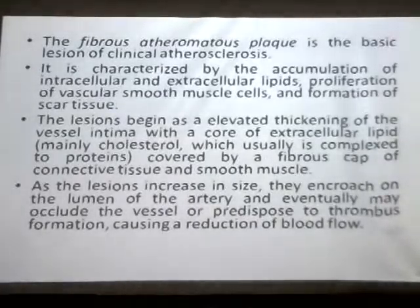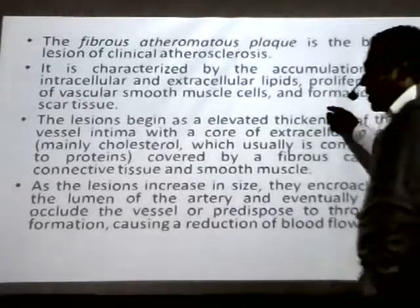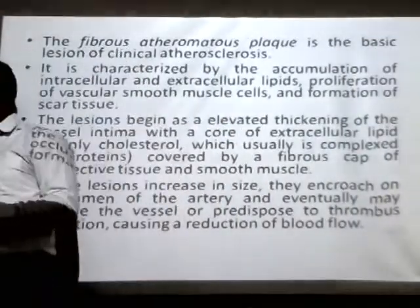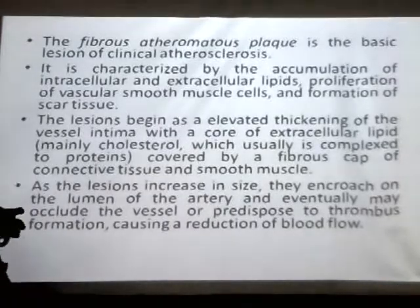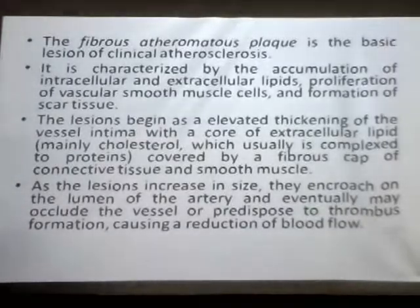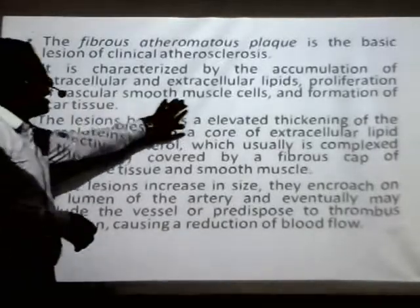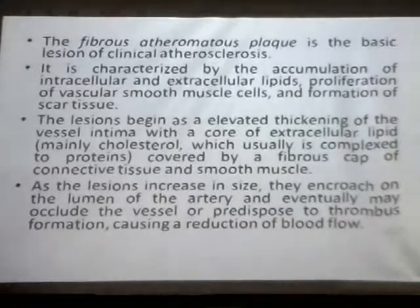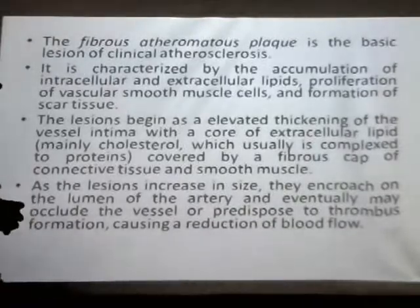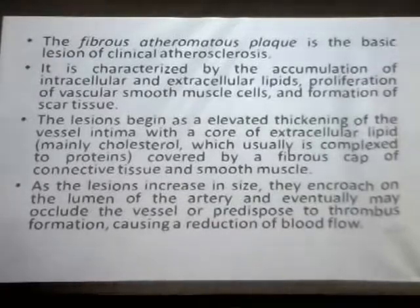The fibrous atheromatous plaque is the basic lesion of clinical atherosclerosis. Clinical manifestation only begins in the fourth decade, where fibrous atheroma has developed. Its characteristic features include accumulation of intracellular and extracellular lipid, proliferation of VSMC — vascular smooth muscle cells — and formation of scar tissue, as the injury related to atheroma development triggers a repair process leading to scar formation.